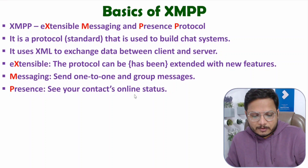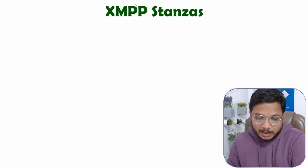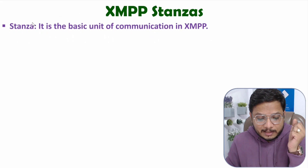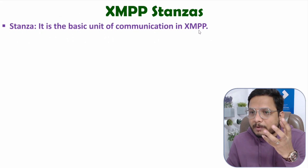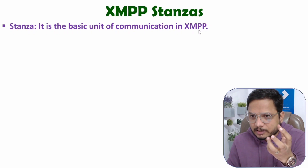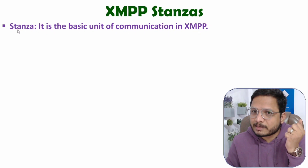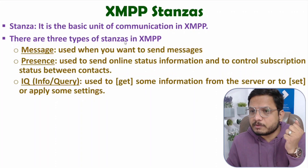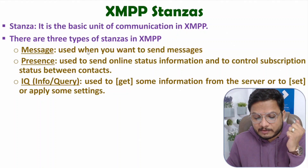That covers the basics of XMPP. Now let's look at XMPP stanzas. Stanzas are the basic unit of communication in XMPP — we do communication by messages, and the basic unit of a message is called a stanza. There are three types of stanzas used in XMPP. The first is the message stanza, used when you want to send messages.